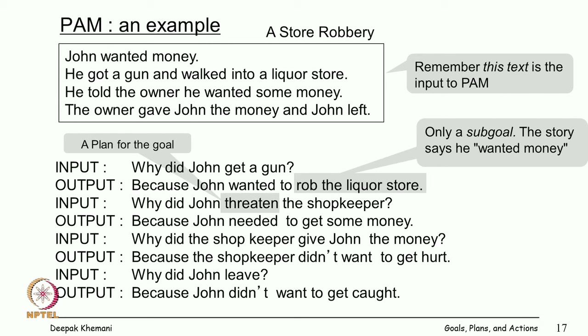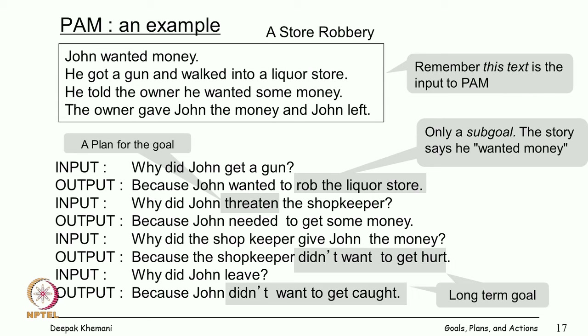The goal was he wanted money, but the sub-goal was to use a plan to rob the store, and threatening is part of a plan of robbing a store. Then we have long-term goals: some goals are immediate like being hungry or wanting money, but long-term goals — wanting to be happy, wanting to be alive — will always be there as something which helps you understand the story.